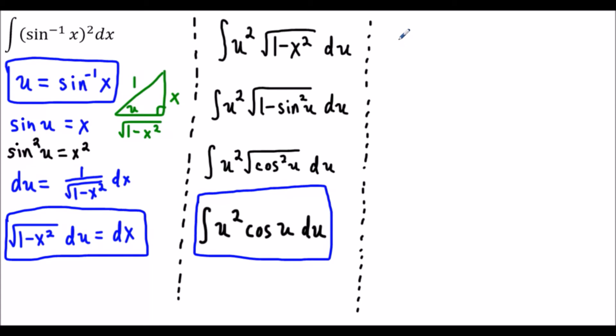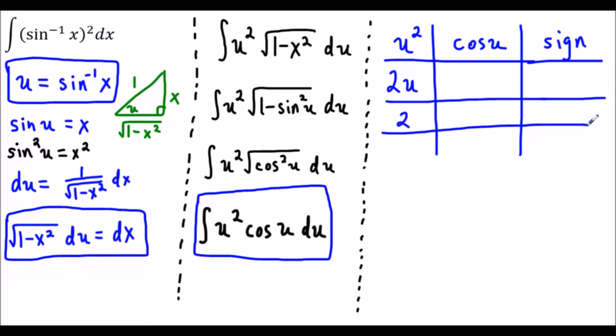We start off with u squared. We're going to write the next part of our integral which is cosine u and for the last part we're going to record the sign changes. The way this algorithm works is we start off with the first term u squared and we keep taking the derivative until we've exhausted it completely. We take the derivative we'll get 2u. If we take another derivative we're going to get 2, and if we take one last derivative we'll get 0. When we get 0 we stop.